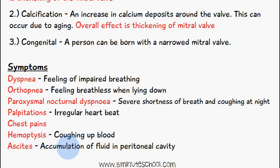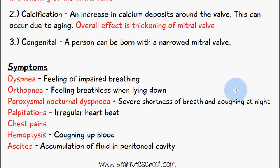Further symptoms include chest pains, hemoptysis which is the coughing up of blood, and ascites which is the accumulation of fluid in the peritoneal cavity — also known as abdominal dropsy — where the abdominal region looks abnormally enlarged.